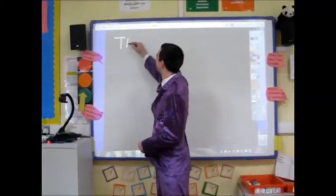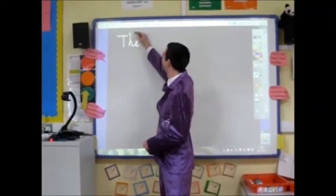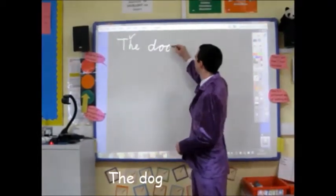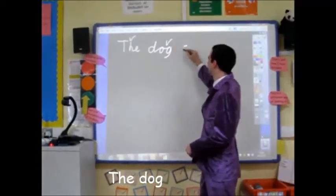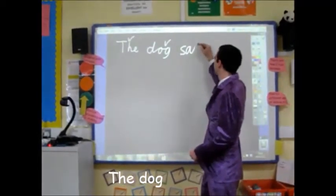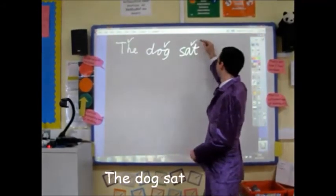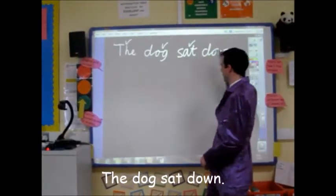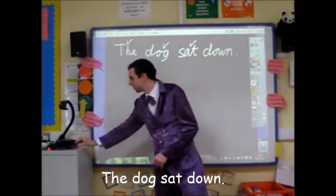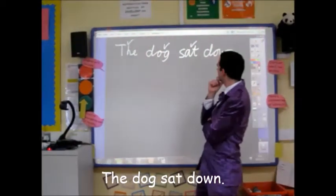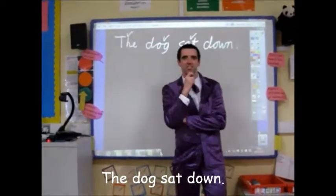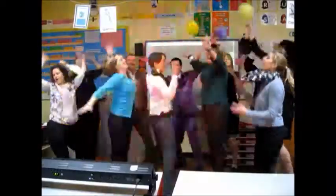I wrote some words and started off with a capital letter. Added a subject, then made sure that I had used a verb. I finished off with a stop dot, then put my pencil down. I read it back and then guess what? It's all there — a sentence.